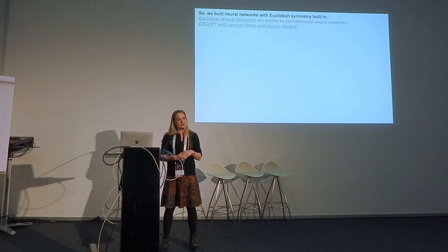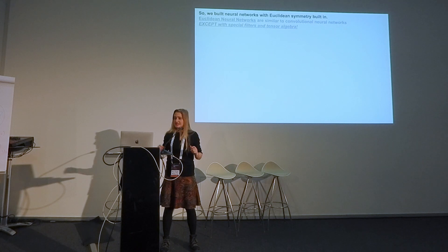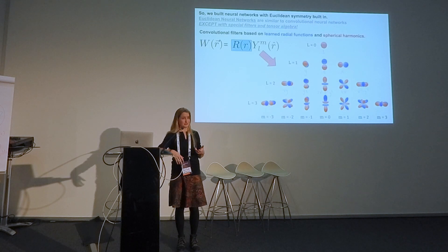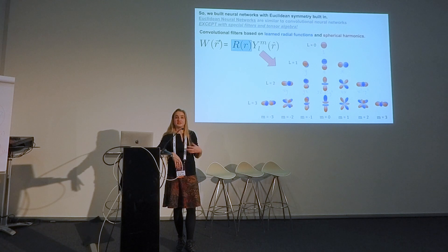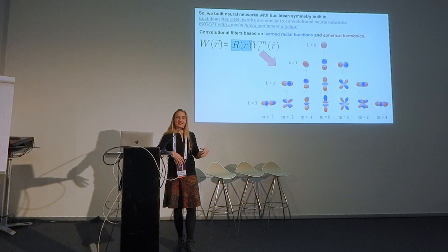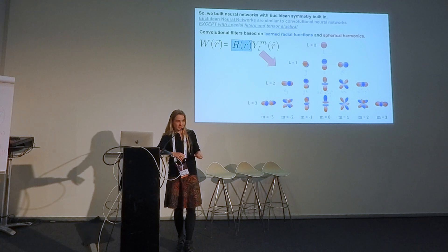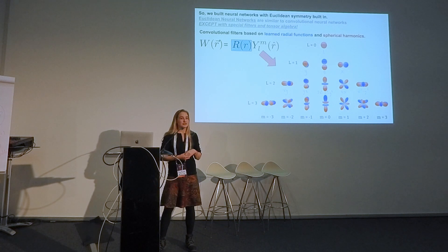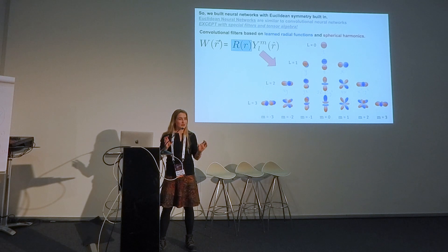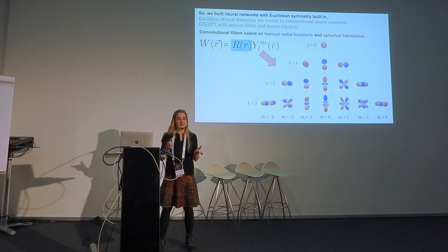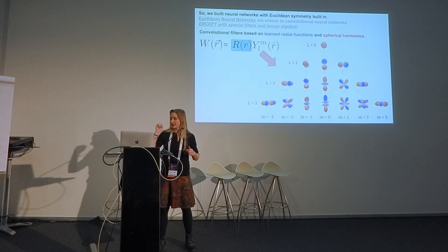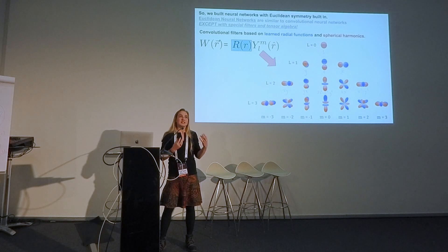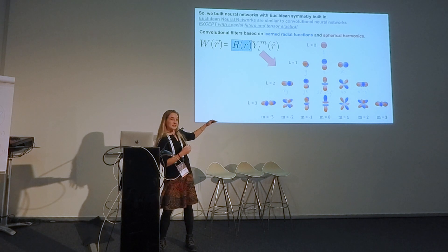These are very similar to convolutional neural networks with some important caveats. We have very special filters: rather than a general filter W, we're doing W of R-vector — a continuous filter — because we're dealing with point clouds rather than images. We constrain our convolutional filter to be separable into a learned radial function and spherical harmonics. These spherical harmonics have different frequencies grouped together.